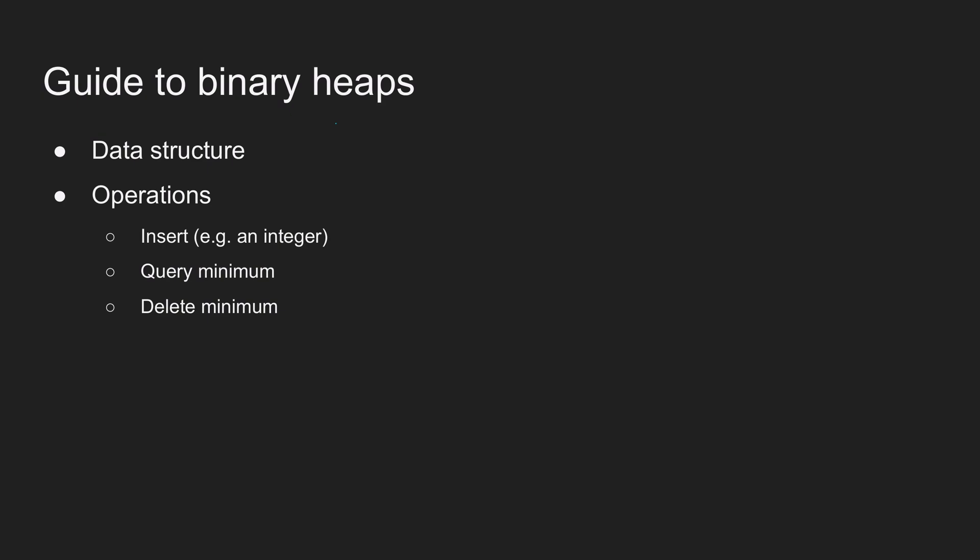Today we're going to be talking about binary heaps. A binary heap is a data structure that allows the insertion of elements, querying the minimum of all the elements in the heap, and deleting the current minimum. There are some other operations like heapify, meld, or decrease key, but I'm not going to go over those in this video. Leave a comment if you want me to cover these in a separate video.